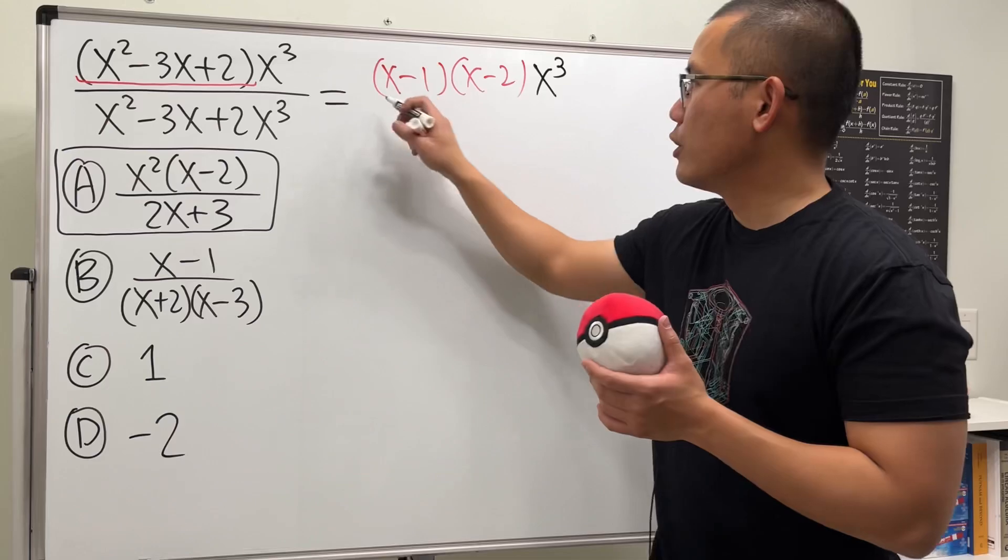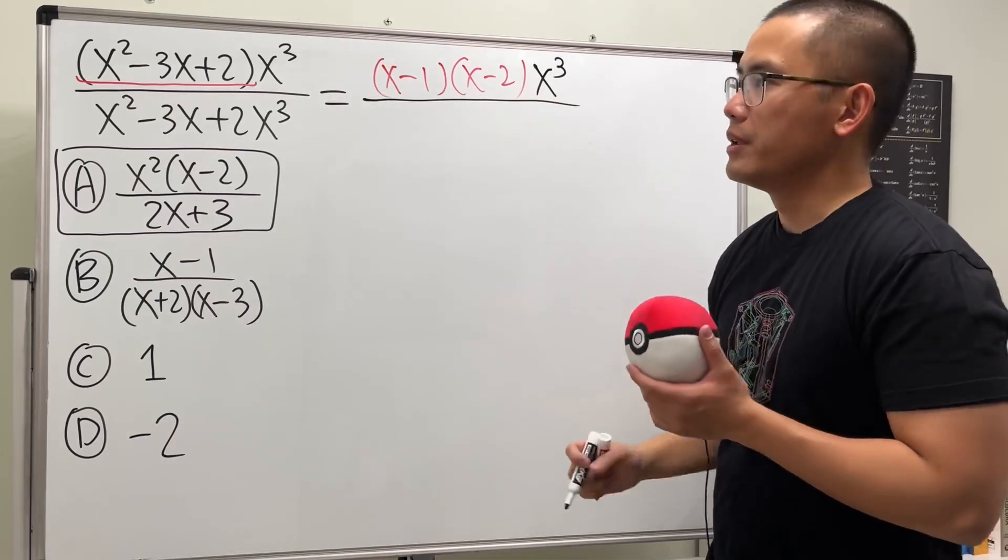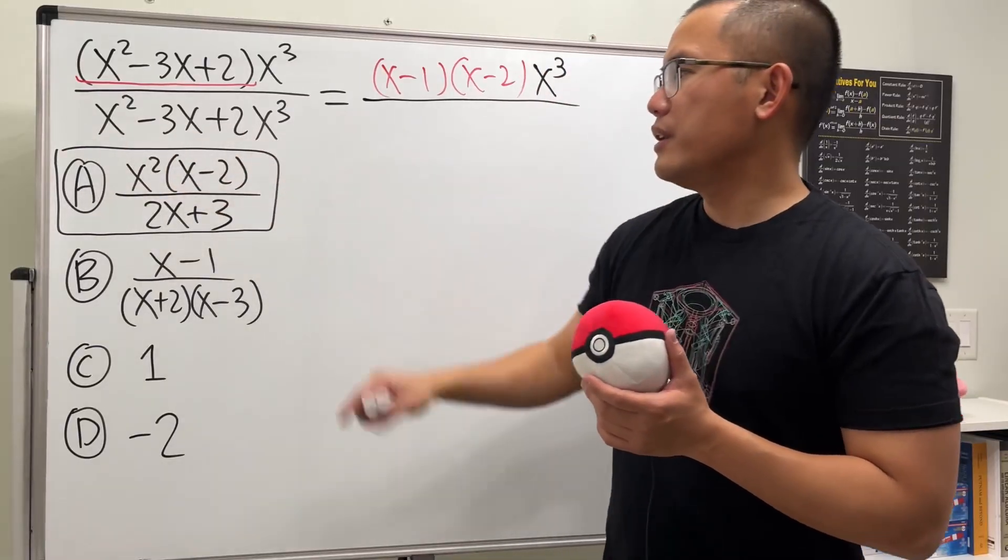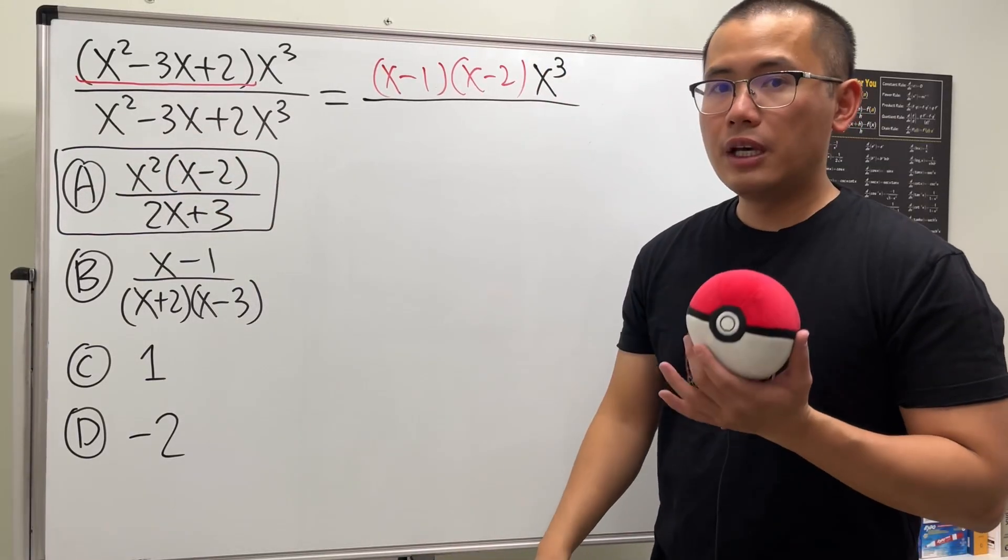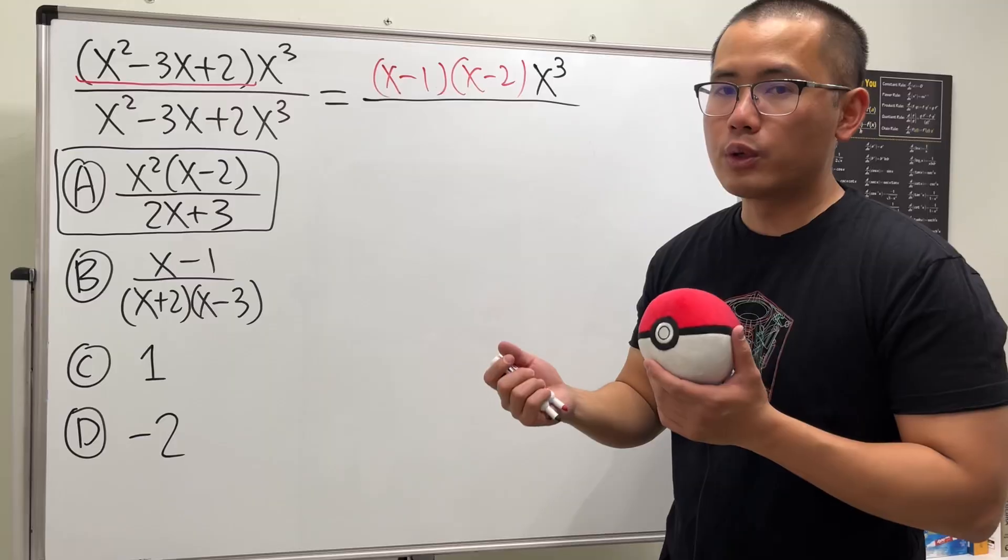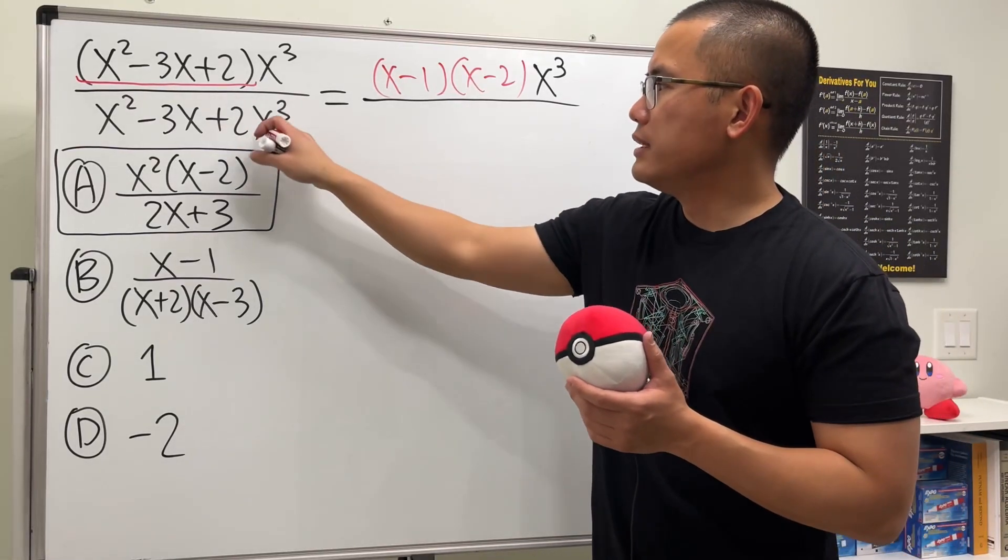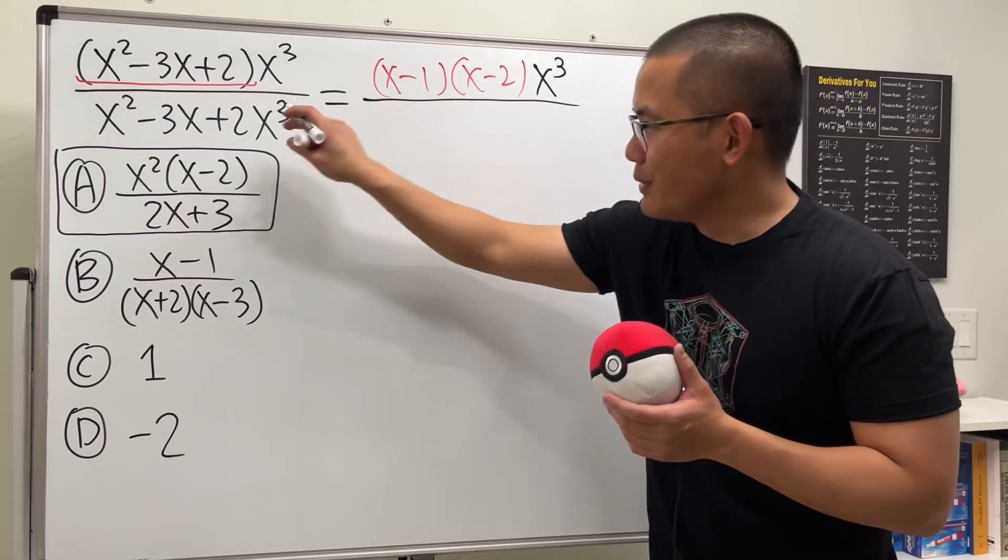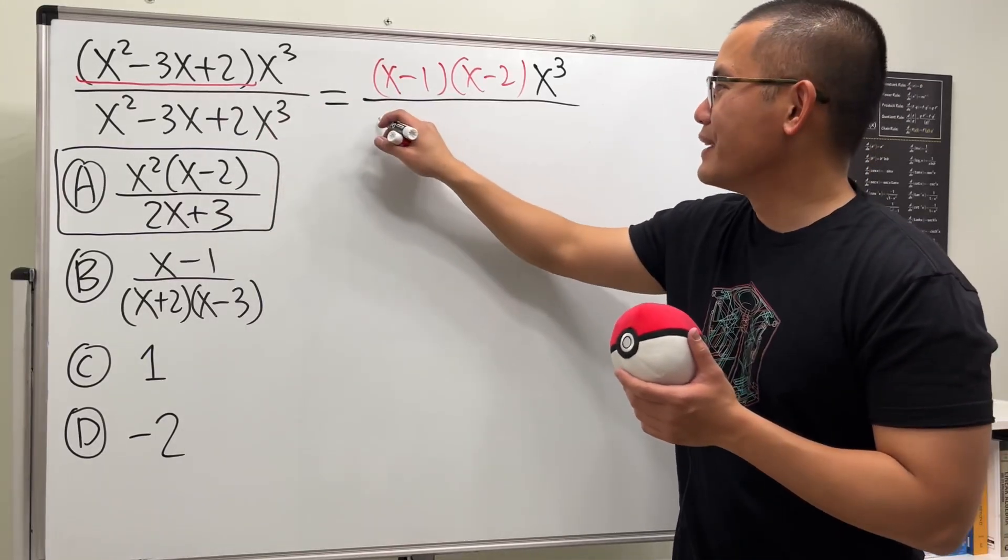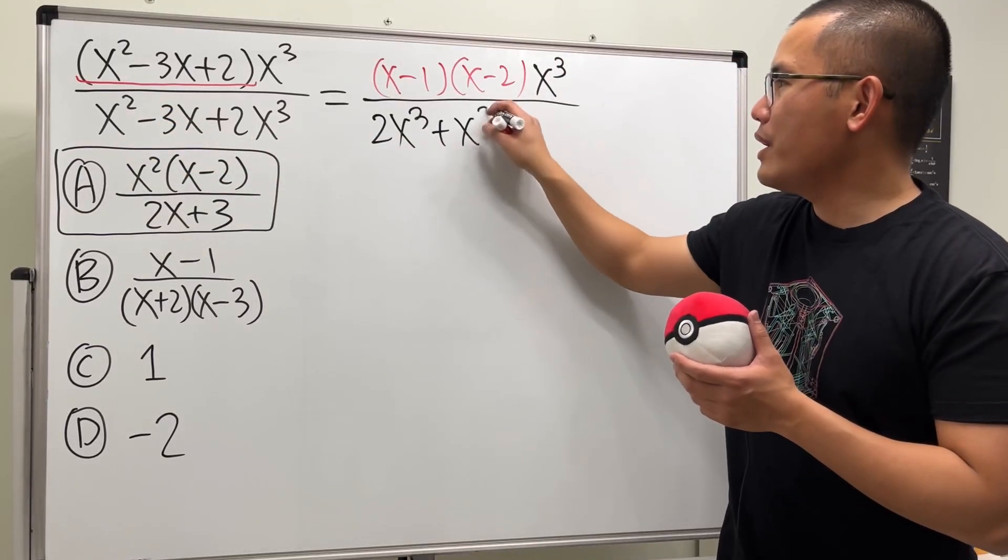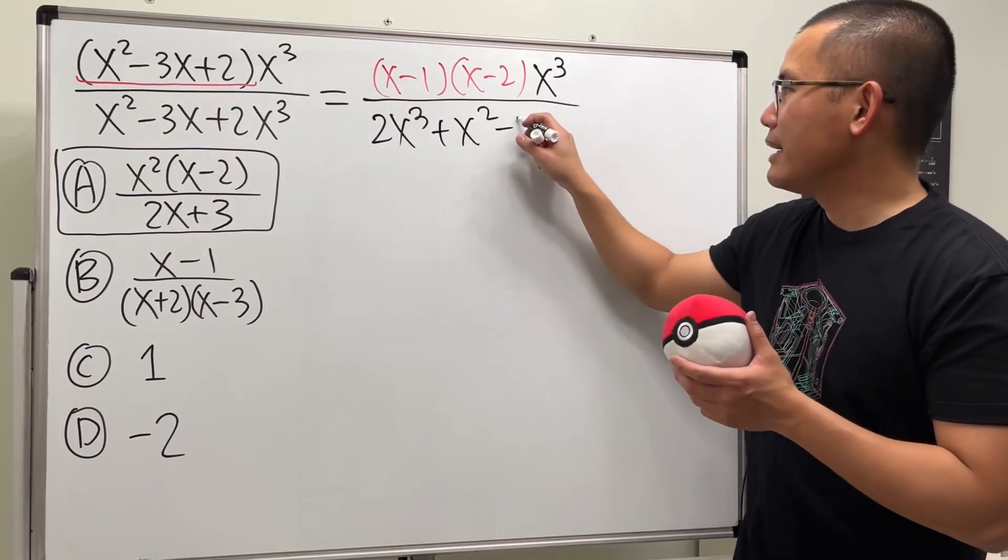For the bottom it's trickier. First off, this right here is kind of out of order because we like to have x to the highest power first. Let's put this at the front first, so we have 2x³ plus x² and then minus 3x.